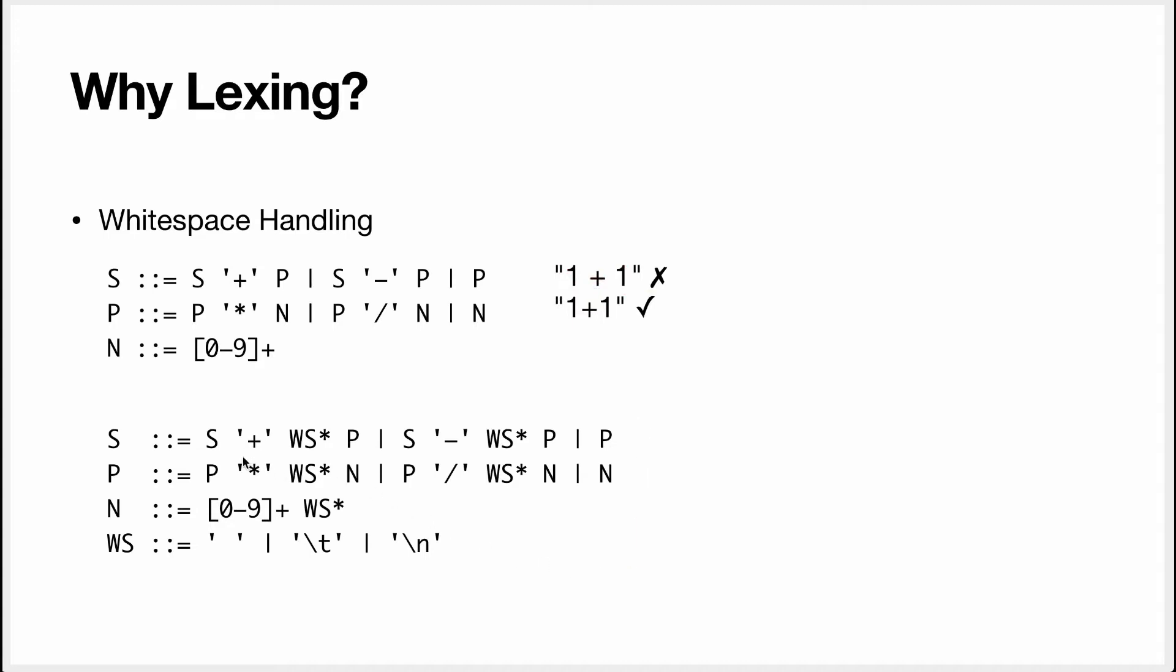Now if you need to re-write the grammar so they accept white space it becomes quite a mess. You need to after each operator insert this white space rule and a repetition of it and the white space I've defined it to be spaces, new lines and tabs also after numbers. This is a bit ugly.